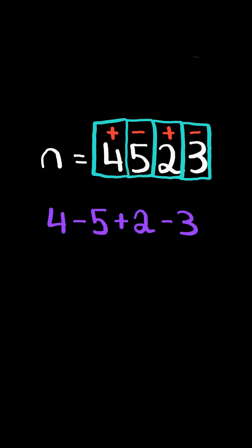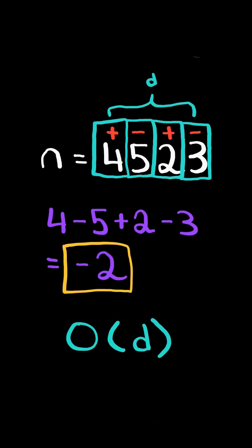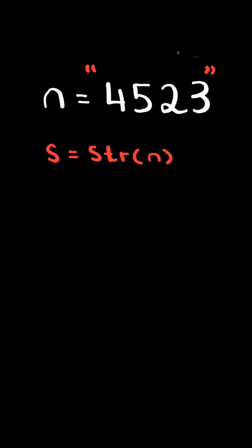Sum all the digits with their corresponding sign and return the result. We will solve this in O of D time, where D is the number of digits. First, we convert the number into a string and keep track of the total sum.